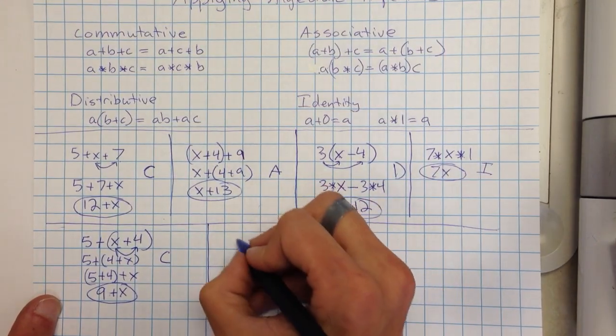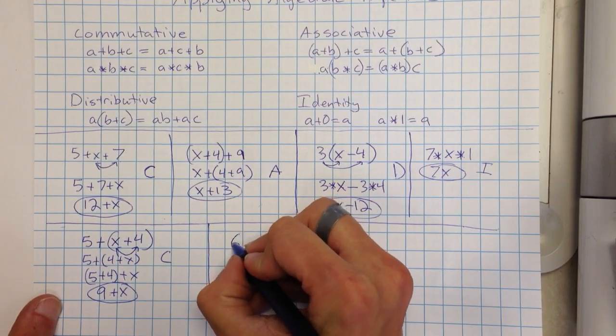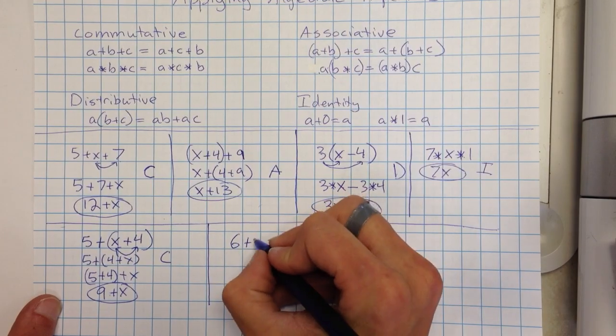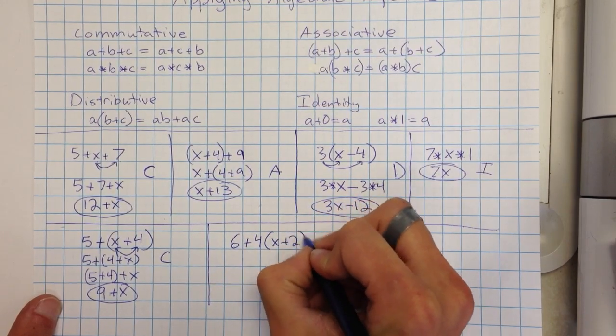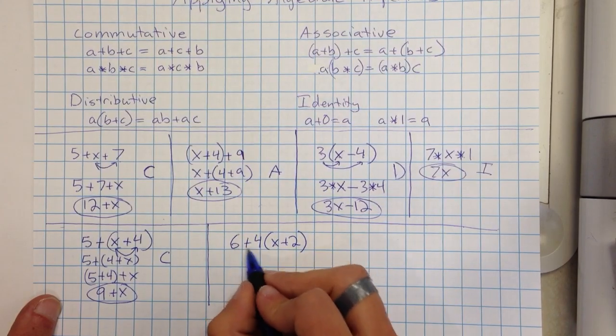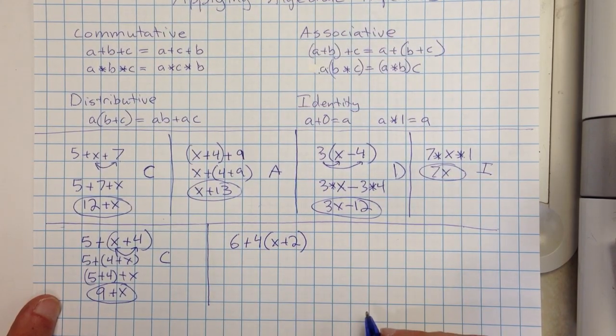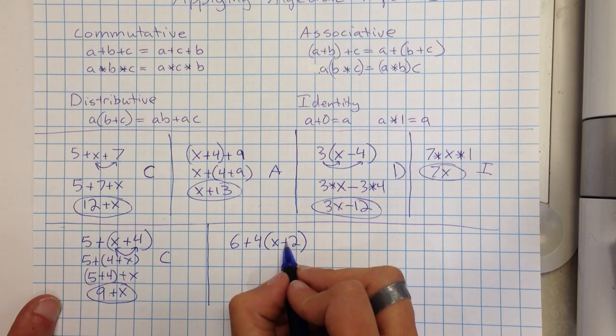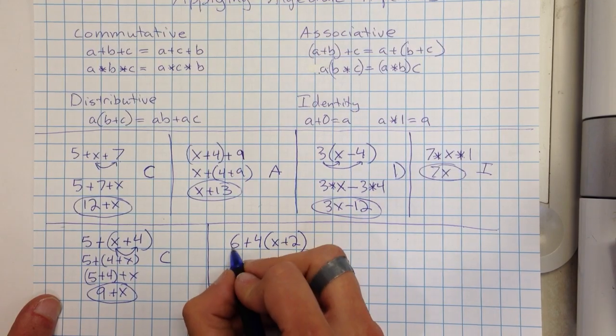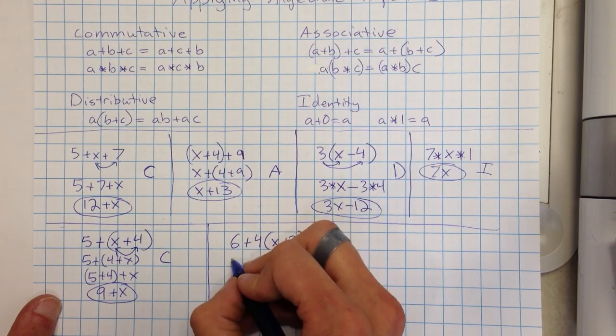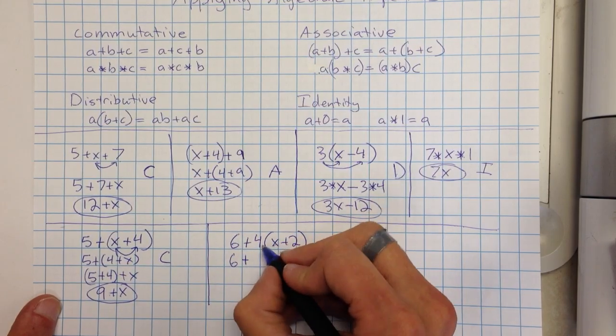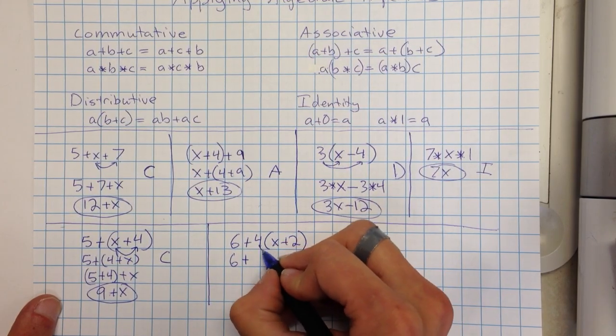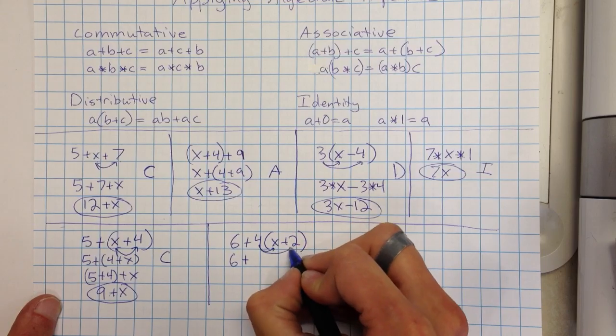We'll do one more. Let's say I had 6 plus 4 times X plus 2. Now I've got some addition here. I've got some multiplication. I'm definitely going to have to apply the distributive property because I have multiplication and addition right here. So I'm just going to kind of leave this 6, it's just going to kind of come back down and keep that addition. So I'm just going to drop those. And then I'm going to distribute this 4 to the X and I distribute the 4 to the 2.